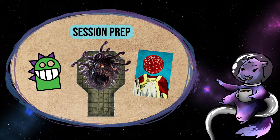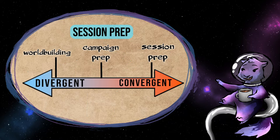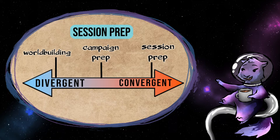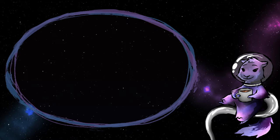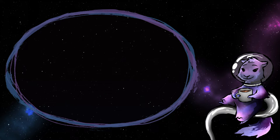These are the granular practical considerations you need to run your game. On the spectrum of divergent to convergent thinking, we are all the way into convergence now. You're not dreaming up a cool encounter, you're taking the cool encounter you already dreamed up and deciding on the number of enemies, what their stats are, and how to deploy them. And I think that's what makes it challenging. It doesn't always play to our strengths.